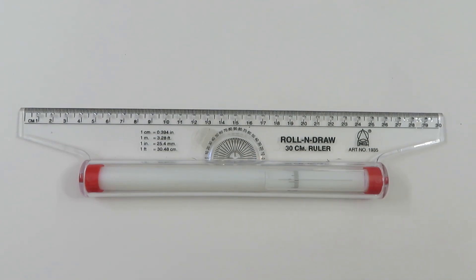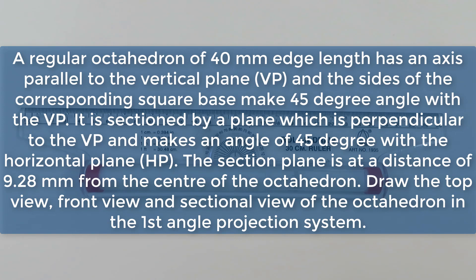In this video I would like to solve one problem. The problem is: a regular octahedron of 40 millimeter each edge length has an axis parallel to the VP, and the sides of the corresponding square base make 45 degrees to the VP. It is sectioned by a plane which is perpendicular to the VP and makes an angle of 45 degrees with the HP. The section plane is at a distance of 9.28 millimeter from the center of the octahedron. Draw the top view, front view and sectional view of the octahedron.